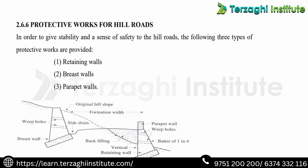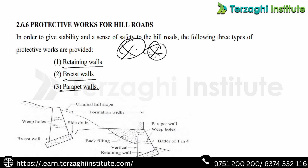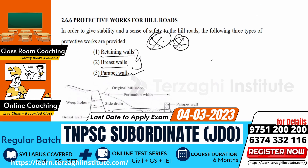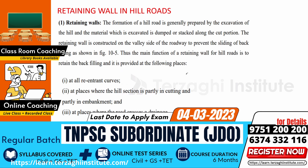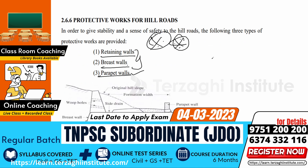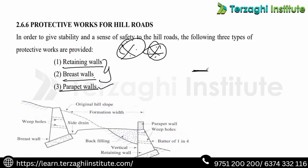Protective works for hill roads — very important topic and question area. The three protective works are: retaining walls, breast walls, and parapet walls. If you learn a comparison between breast wall and retaining wall, it is easy. For freshly cut soil or already existing soil, we provide these two walls. The breast wall is on the upward side — the upside of the hill — the upward side of the road.